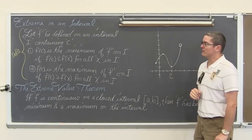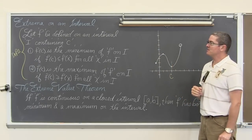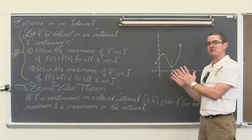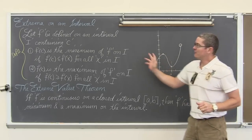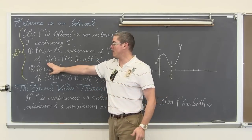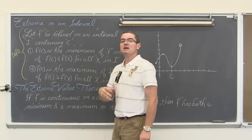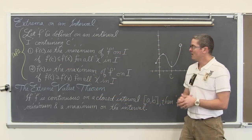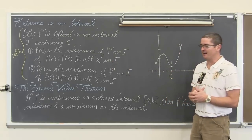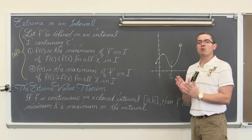Let f be defined on an interval i containing c. f is the minimum of f on i, this interval, and it could just be a part of the x-axis. Remember this is function notation — we get y values out of a function, so our y value at c is lower than all of the other y values, either in the entire graph or just that neighborhood, for all x in that interval i.